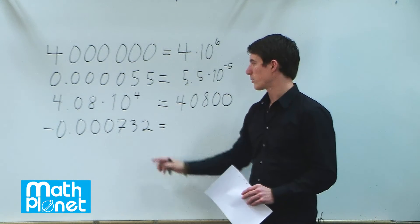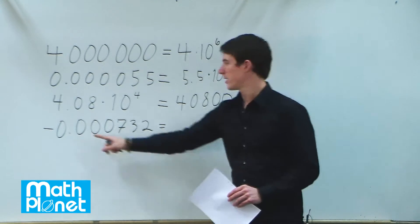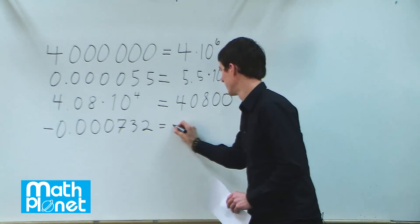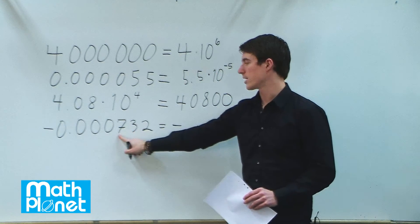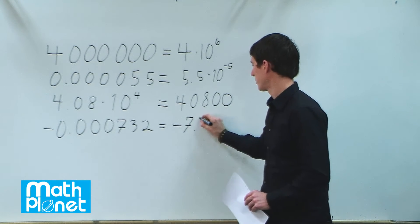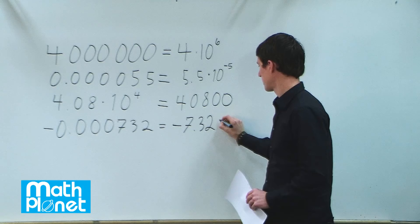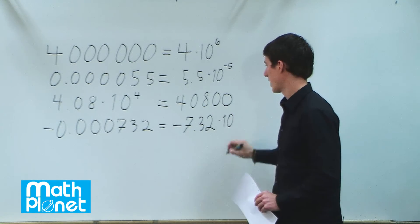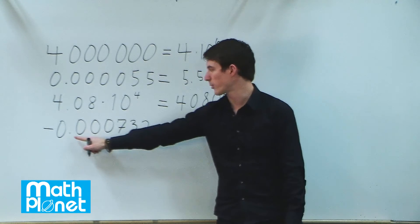This is another number we want to write in scientific notation. The negative stays the same out front. Then we write the significant digits: 7, 3, and 2. We write 7.32 times 10. Now what power do we have? How many places do we move to the right? 1, 2, 3, 4 to get to the first significant digit.